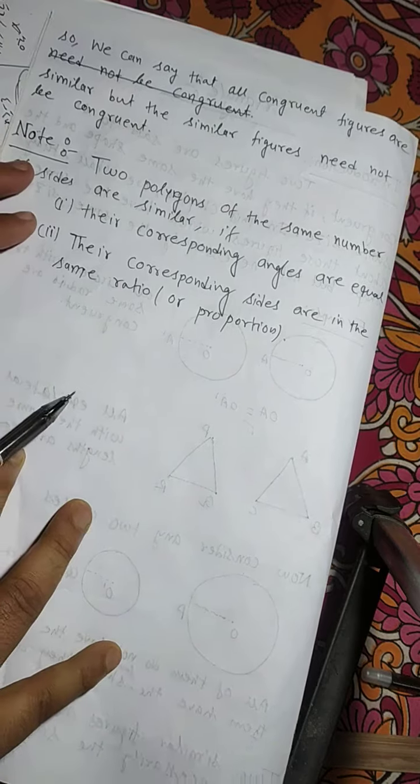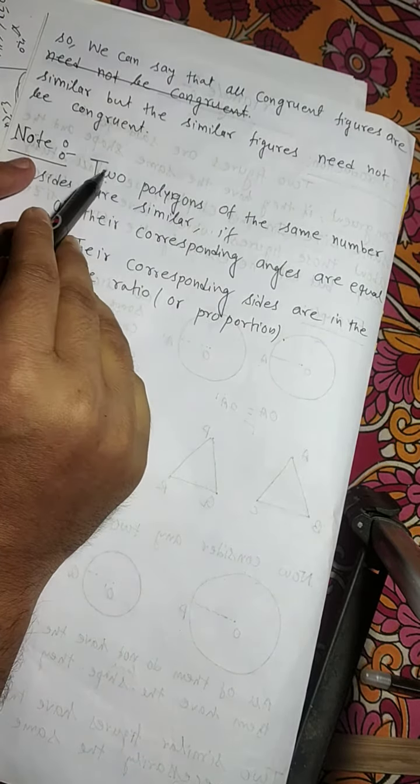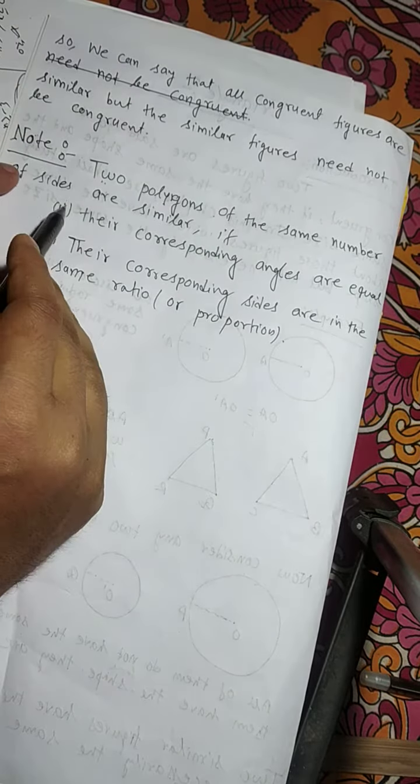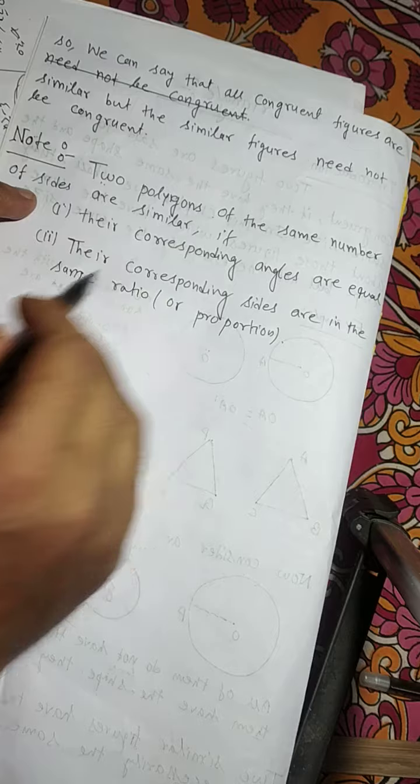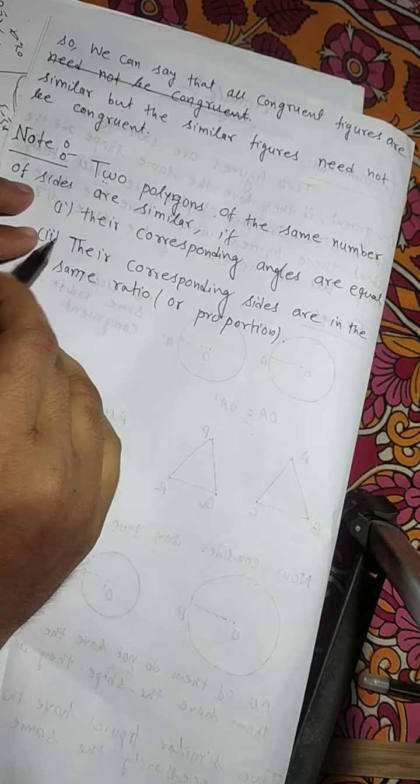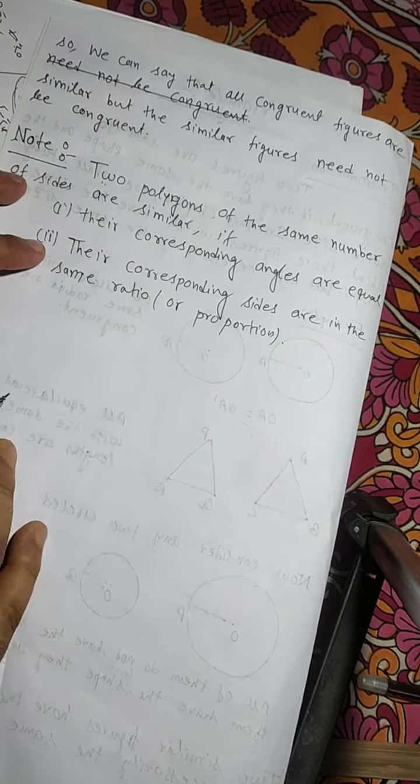Note that two polygons with the same number of sides are similar if their corresponding angles are equal and their corresponding sides are in the same ratio or proportion.